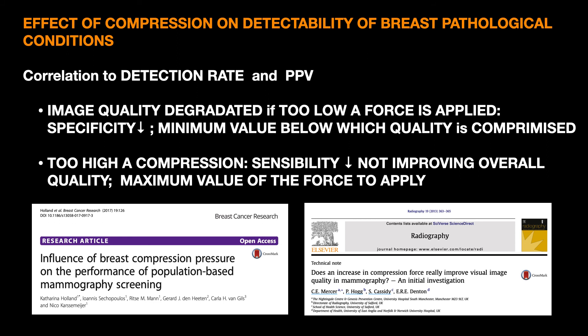We do know that image quality is degraded if too low a force is applied, with a decrease in specificity. It has to be a minimum value below which the quality of the image is compromised, and it should be based on scientific evidence. Furthermore, there are many researchers who suggest that too high a compression force may reduce sensitivity. It is reasoned that softer tumours may become less conspicuous. Pathological tissue may spread out so that the contrast to healthy tissue drops. Other studies show that anyway after a certain value, a further level of compression force does not improve the overall image quality.